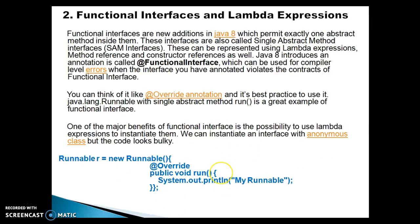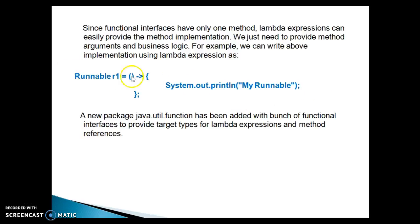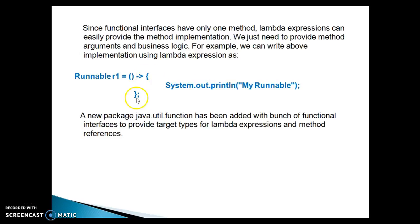This ugly anonymous class code can be converted into equivalent lambda expressions. Since functional interfaces have only one method, lambda expressions can easily provide the method implementation. We just need to provide the method arguments and business logic. The run method has no parameters, but if a method accepts parameters, you can pass them as well. If there is only one statement, the curly brackets can also be removed.